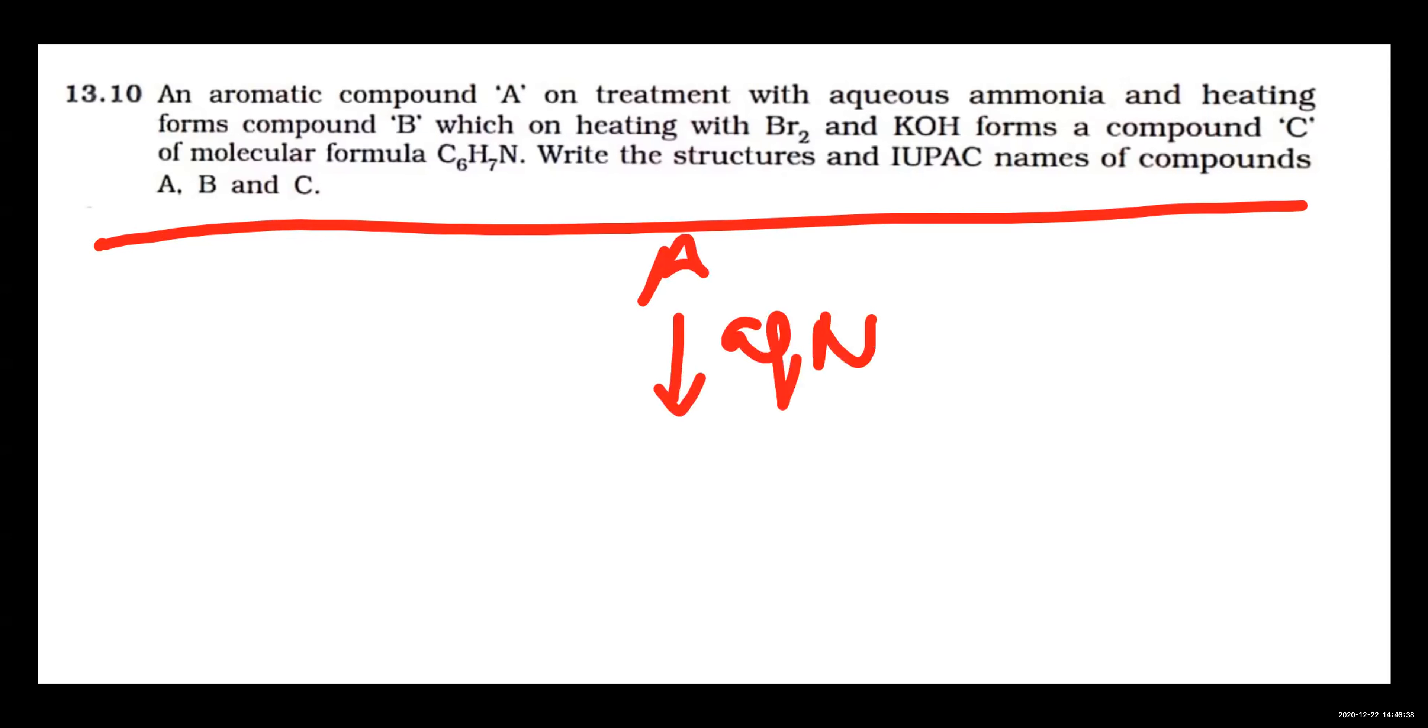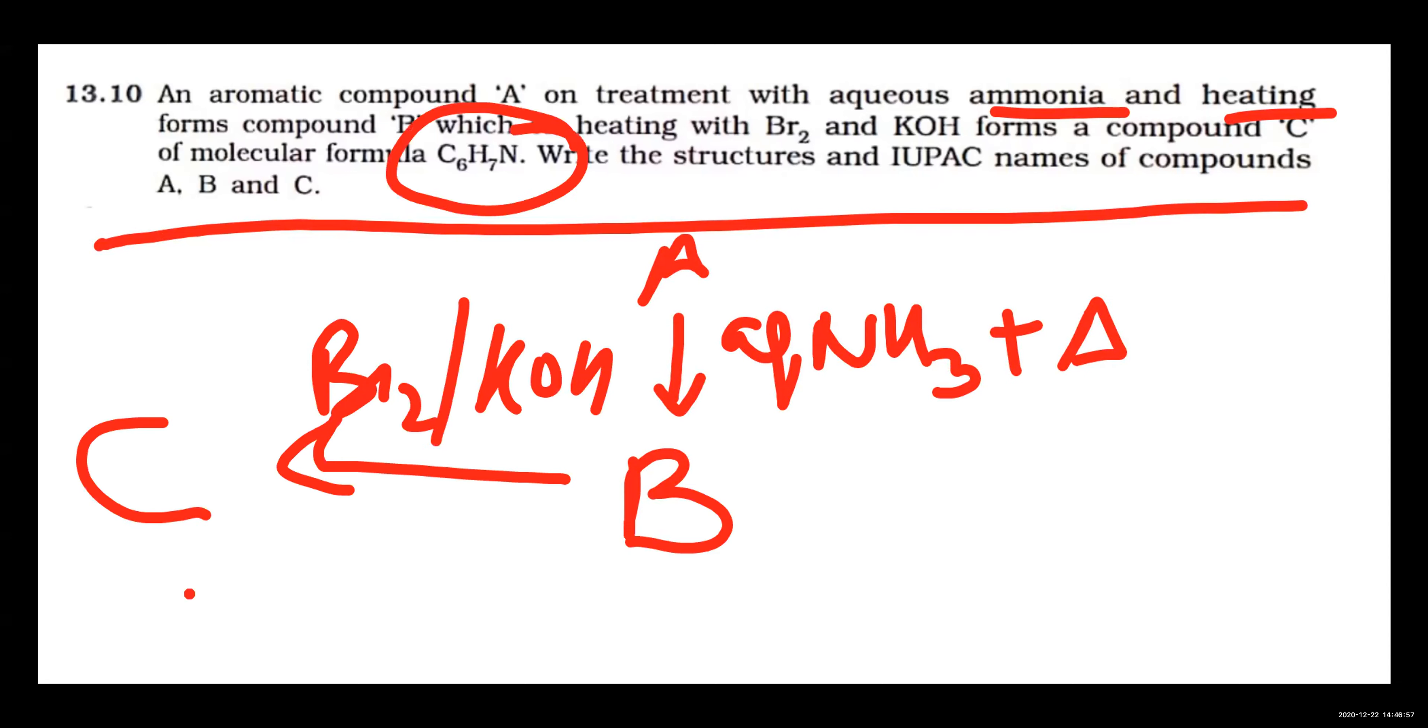I am doing this with aniline and heat. Heat also with aqueous ammonia. So compound becomes B. And B compound when reacted with Br2/KOH with aniline, compound becomes C. This compound becomes C. C6H7N.